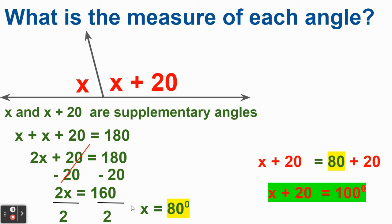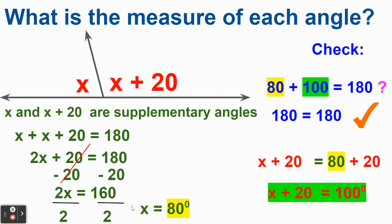So all that means is that x, right? After we check it, let's make sure we get 80 plus 100. Do we get 180? And yes, we do. That checks out. So that really confirms the fact that x is 80 degrees and x plus 20 is 100 degrees right there.